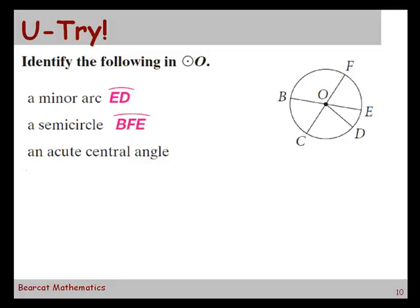We need to find an acute central angle. Angle DOF. Is that acute? That's close. I don't know if I would answer that one. DOE would. Yeah. DOE has to be acute. DOF looks like it's really close to 90 or just a hair bigger than 90. So I wouldn't pick that one if DOE is there.